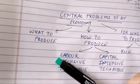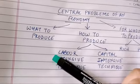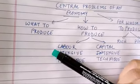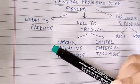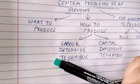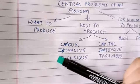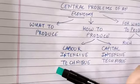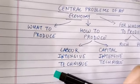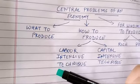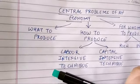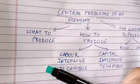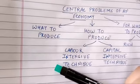In 'What to Produce,' the first and foremost problem of every economy is what goods and services should be produced. Suppose Ramu is a person who wants to open a business. First he has to decide what goods should be produced — whether they should be consumer goods or capital goods. Consumer goods are goods like sugar, cloth, wheat, and ghee, whereas capital goods include machines and tractors needed to produce those goods and services.